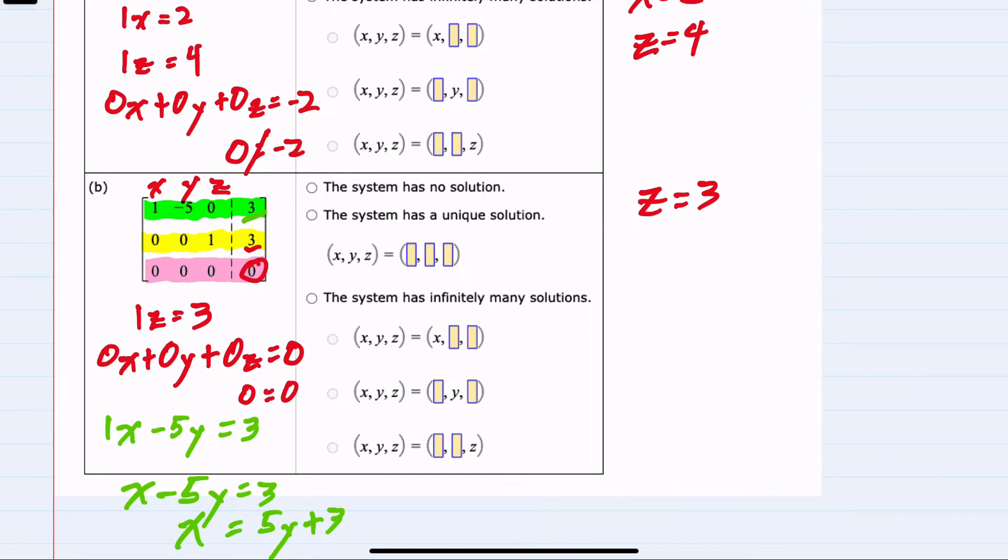So our values are x is equal to 5y plus 3. And we haven't been able to determine anything about y. So y would just be equal to y.